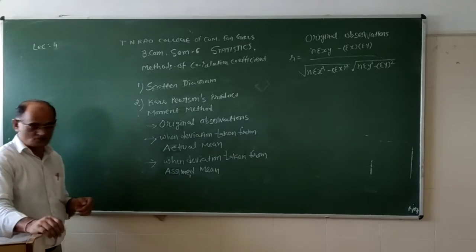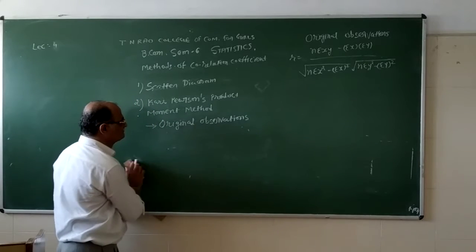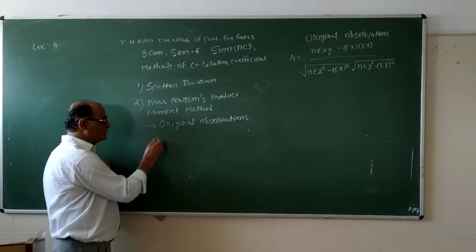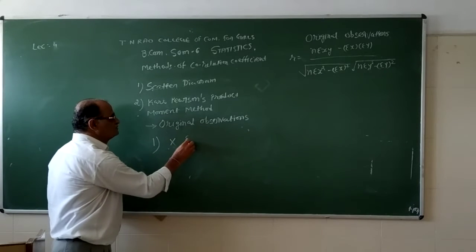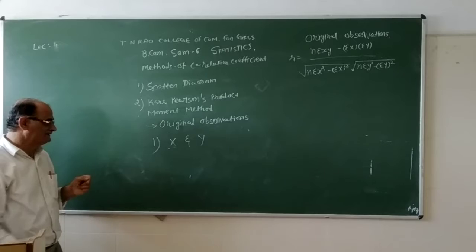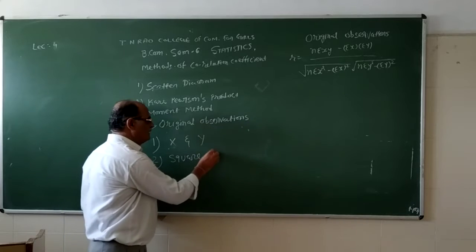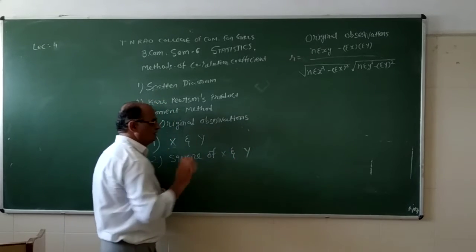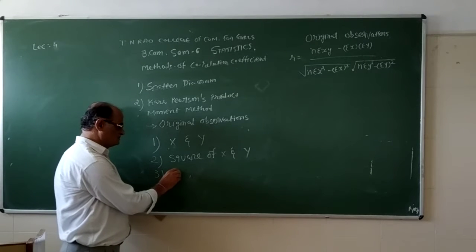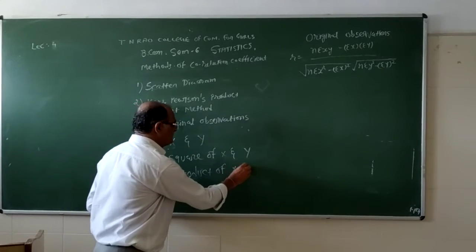Now we learn about the first method, which is known as the original observation method. In this method, x and y are two variables given as per the question. In the second stage, you calculate the square of x and y. Then in the third step, you calculate the product of x and y.